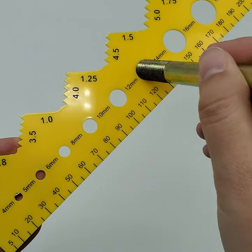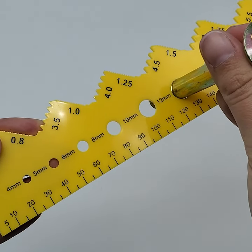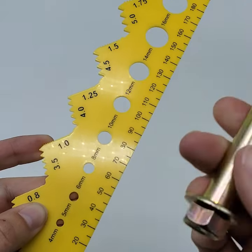You're going to take your bolt and line it up with which diameter hole it best fits. You can see this is a 12 millimeter bolt.